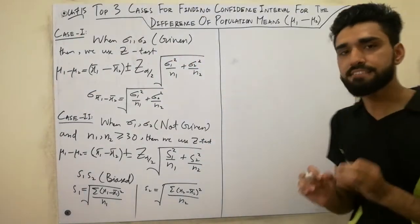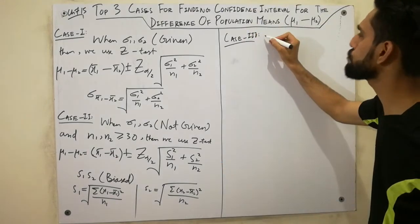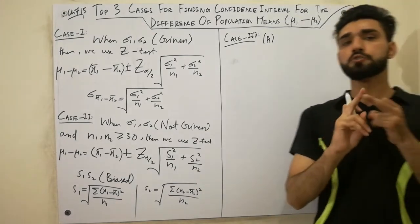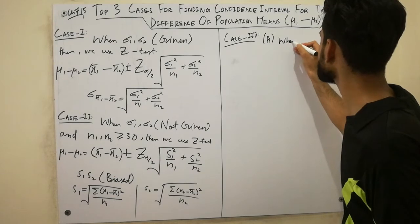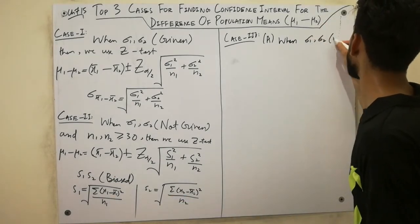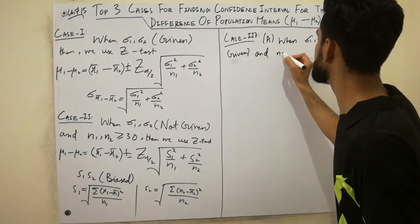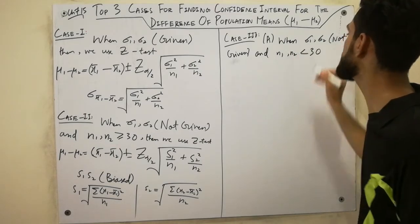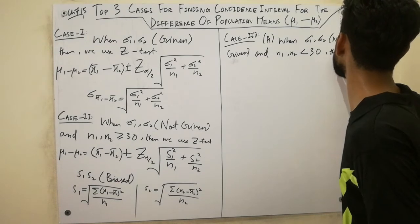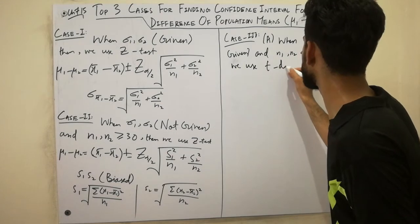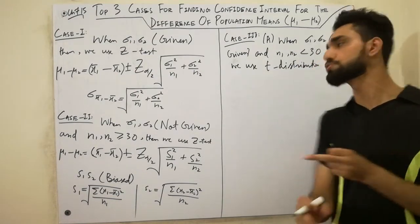The third case is very important and consists of two parts: Part A and Part B. The third case is similar to the second case — σ1 and σ2 are not given — but the key difference is the sample size. When n1 and n2 are less than 30, this indicates a T-distribution. So when the sample size is less than 30, we always use the T-distribution.